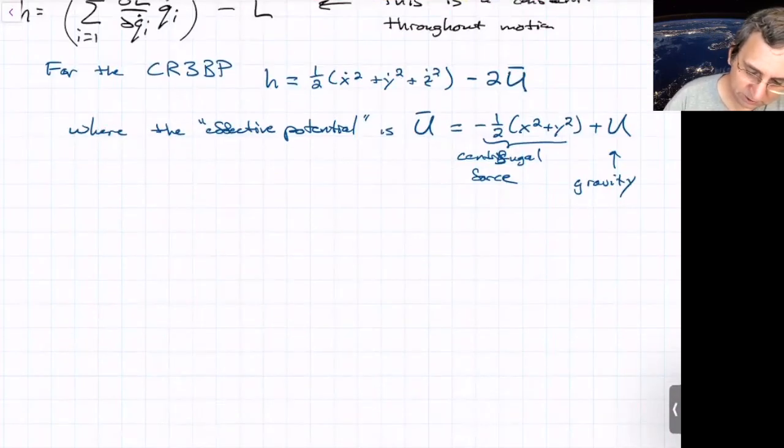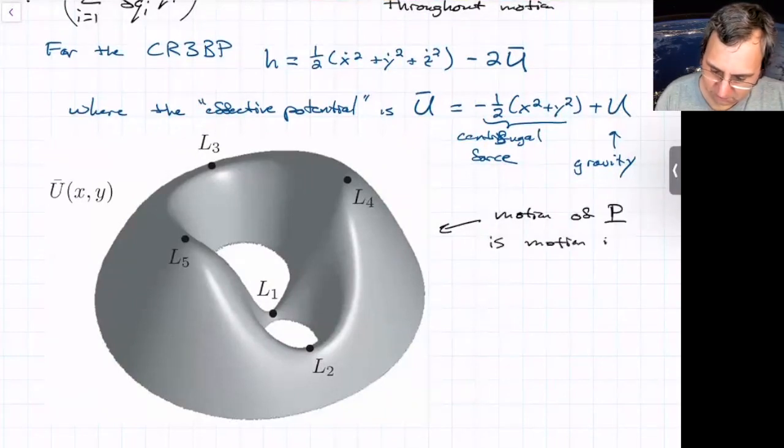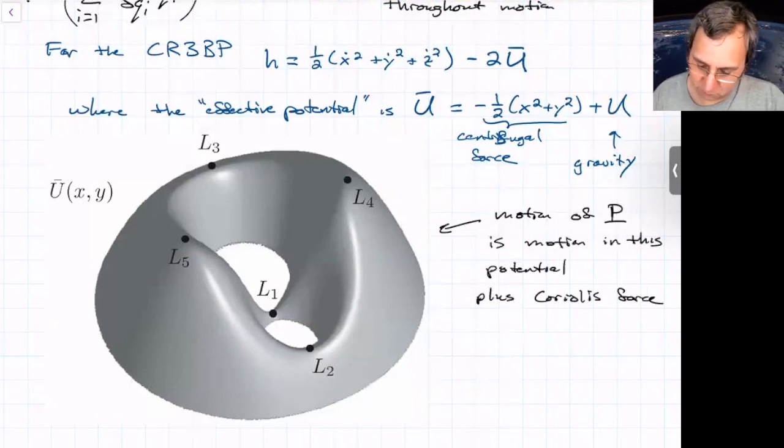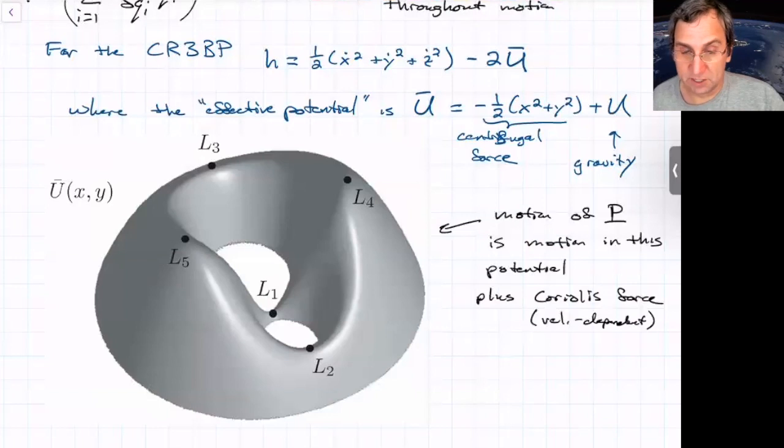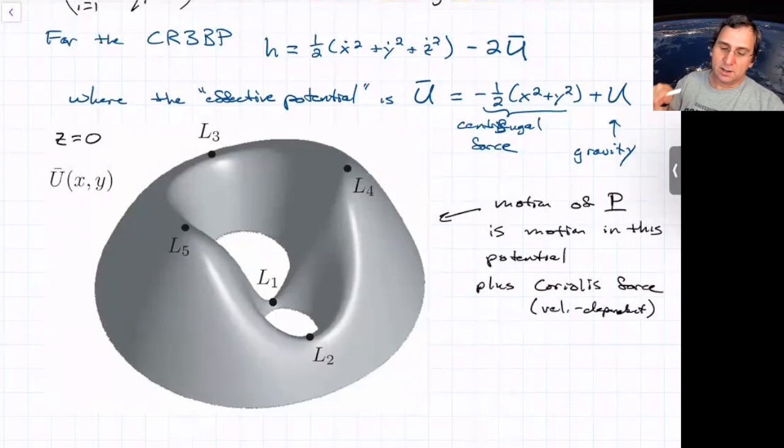So this might be a good time to bring in a figure of what this u bar looks like. This shows the effective potential, but then I cut it off below some certain value. So the motion of the particle P is motion in this effective potential plus Coriolis force. So it's as if you've got this thing and it's rotating around. And so you get those other terms, centrifugal force. The Coriolis force is velocity-dependent. The centrifugal force is not. It's just position-dependent. How far are you from the middle of the rotating frame? This shows the potential energy only limited to x and y. This is just looking at z equals zero. But it gives you a good idea. You could think of a marble, if you want, moving along this surface, but with a Coriolis force, if you can imagine that.